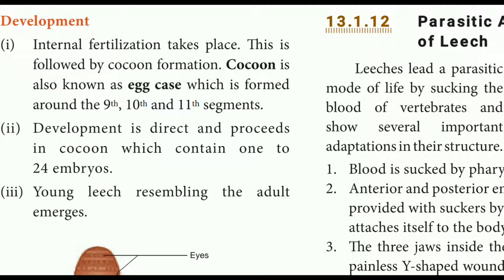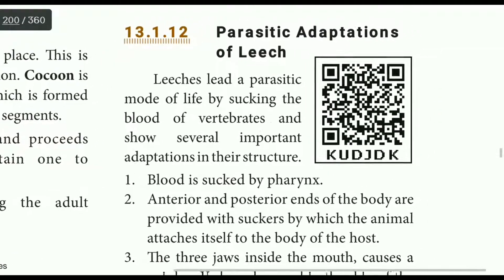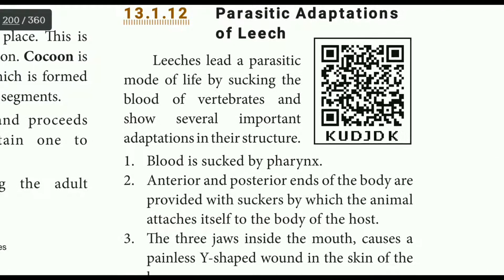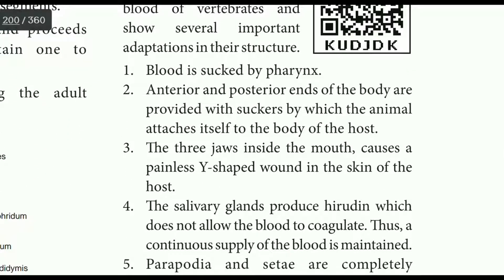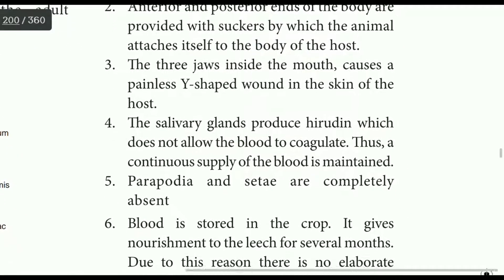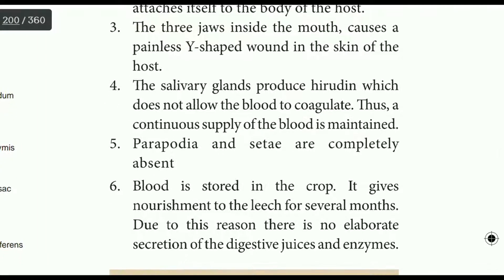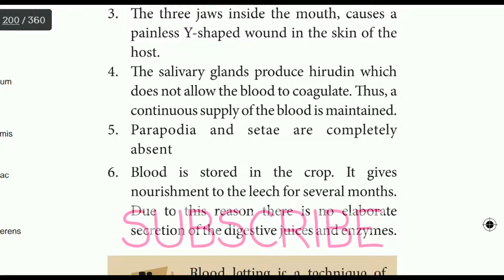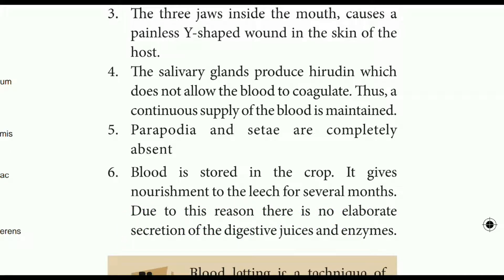Parasitic adaptations of the leech: the leech sucks blood from vertebrates. The pharynx sucks blood into the body. The anterior sucker creates a Y-shaped wound. The bite is painless because anticoagulant substances are released from the salivary glands, preventing blood clotting. The blood is stored in the crop for several months. Digestive juices and enzymes are secreted for digestion.